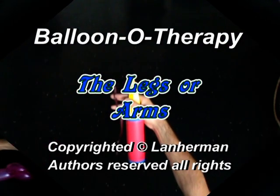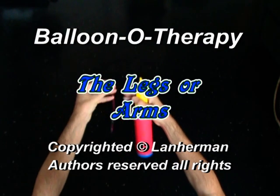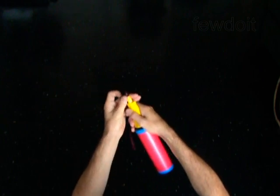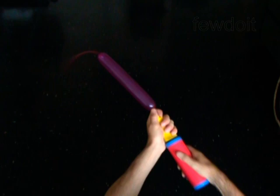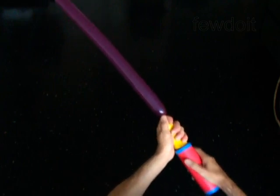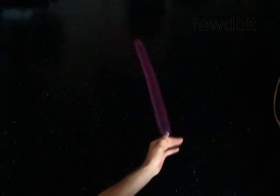Hello. Many different balloon animals and cartoon characters have the same or similar parts of body. So we can use the same parts to make different balloon animals. And today we're going to make legs or arms.